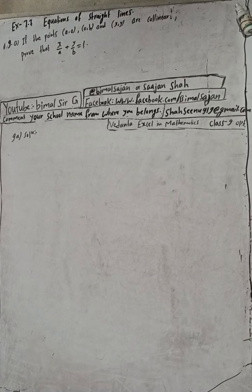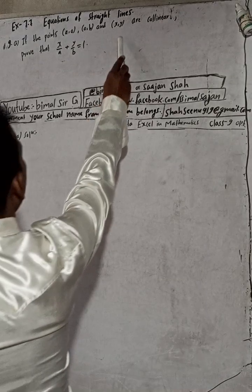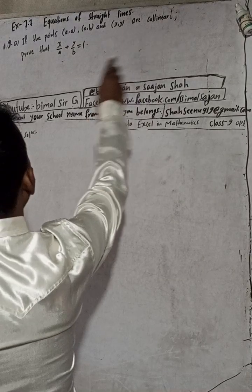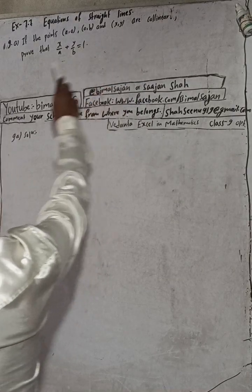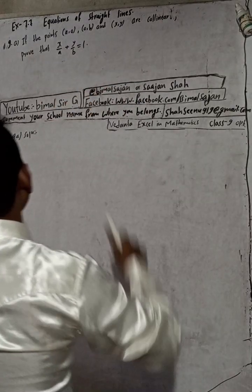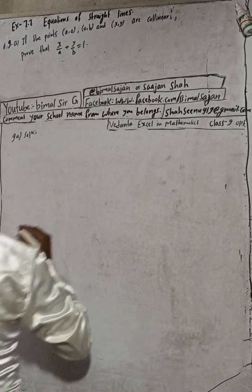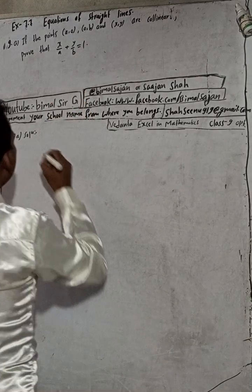The question is: if the points A(a, 0), B(0, b), and C(x, y) are collinear, prove that x/a + y/b is equal to 1.